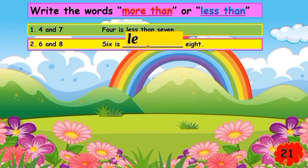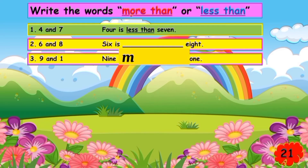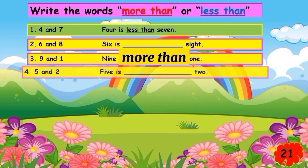Next, number three: nine and one. So nine — is it more than or less than one? Very good, it is more than. So you're going to write M-O-R-E-T-H-A-N. Nine is more than one.